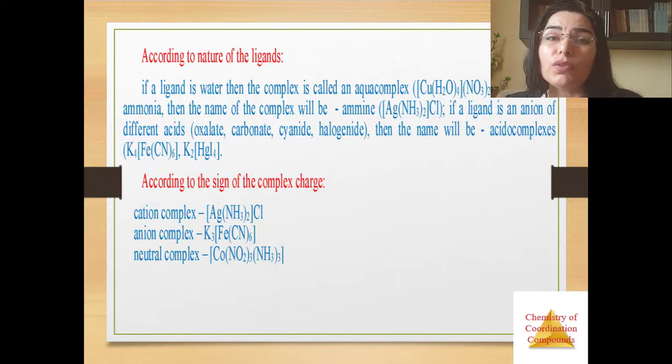If a ligand is an anion of different acids, oxalate, carbonate, cyanide, halogenide, then the name will be acidocomplex.